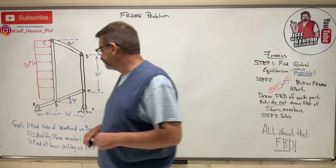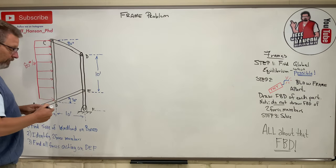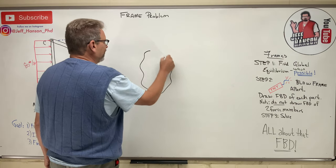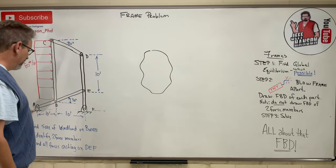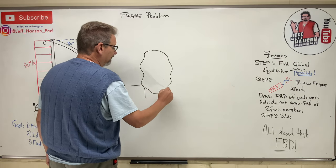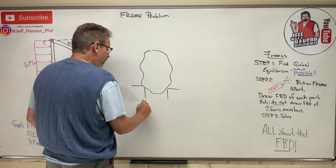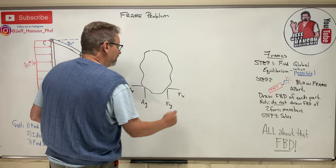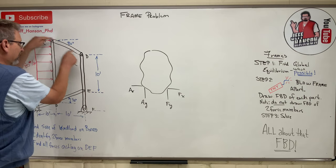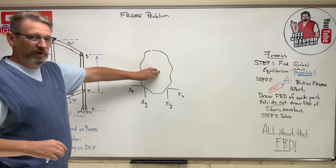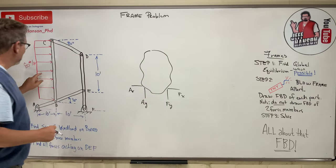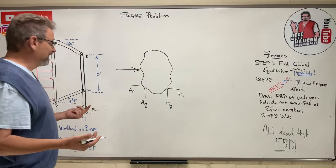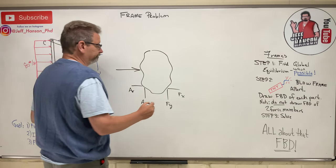Let's start with global equilibrium. Think of this whole frame as a 'potato' — just a big rigid body. At the bottom it's pin-connected on both ends, giving us Ax, Ay on one side and Fy, Fx on the other. This big rigid body has a distributed load on it, and I'll show you how to simplify that into a single concentrated load.